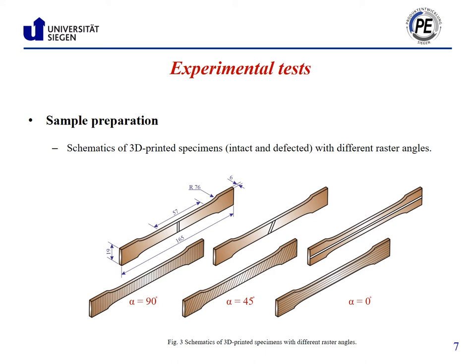It should be noted that the missing extrudates in the defected specimens are oriented with the raster direction in each group. Also, the missing extrudate in 45-degree and 90-degree specimens are three and four extrudates respectively, in order to provide the same defect area in all defected specimens.